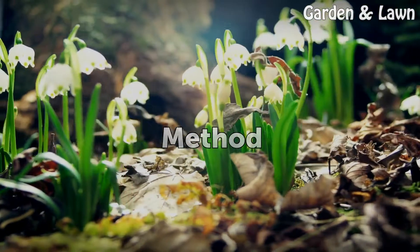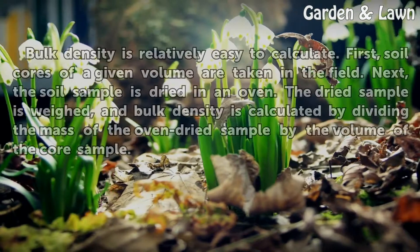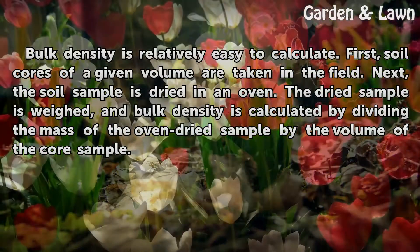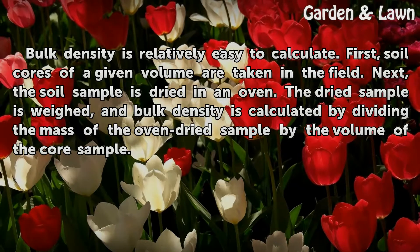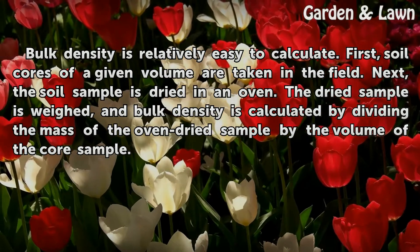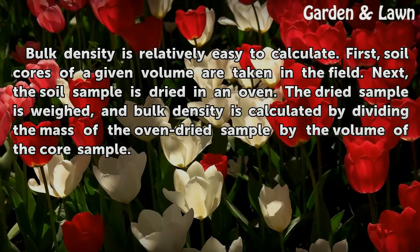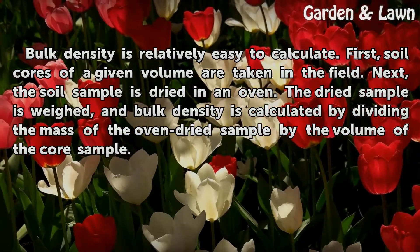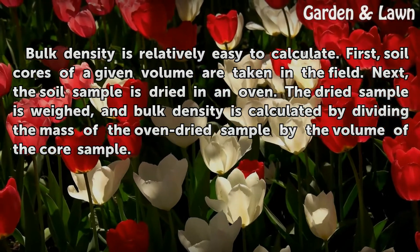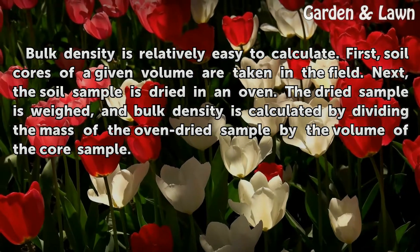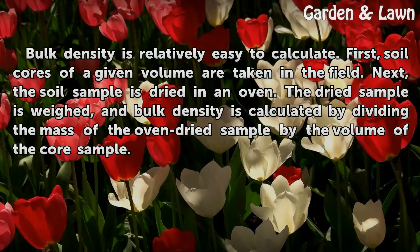Method. Bulk density is relatively easy to calculate. First, soil cores of a given volume are taken in the field. Next, the soil sample is dried in an oven. The dried sample is weighed, and bulk density is calculated by dividing the mass of the oven-dried sample by the volume of the core sample.